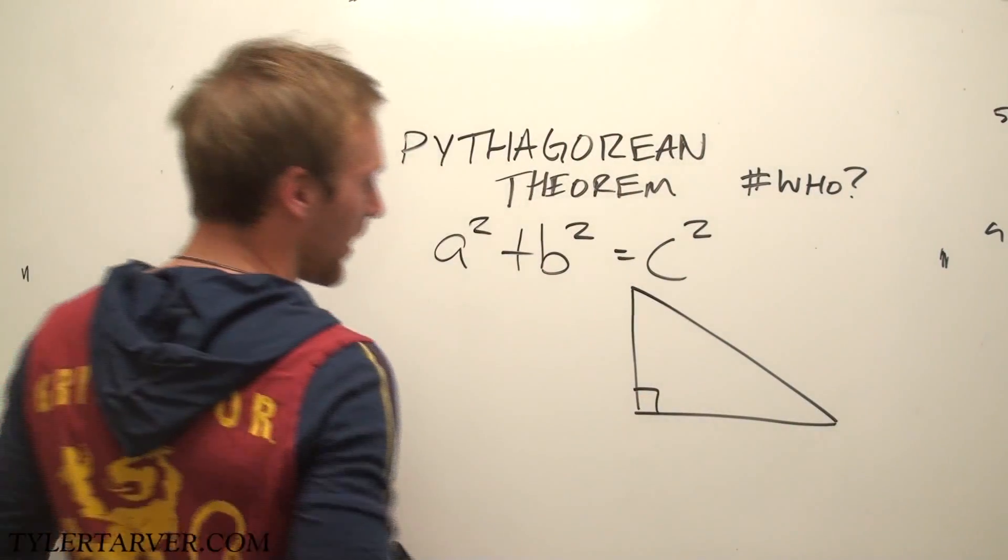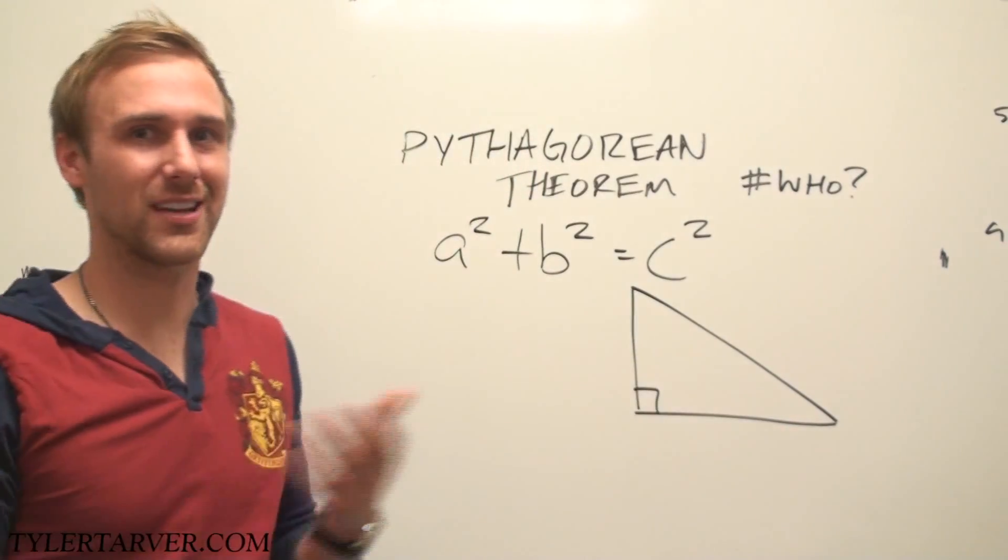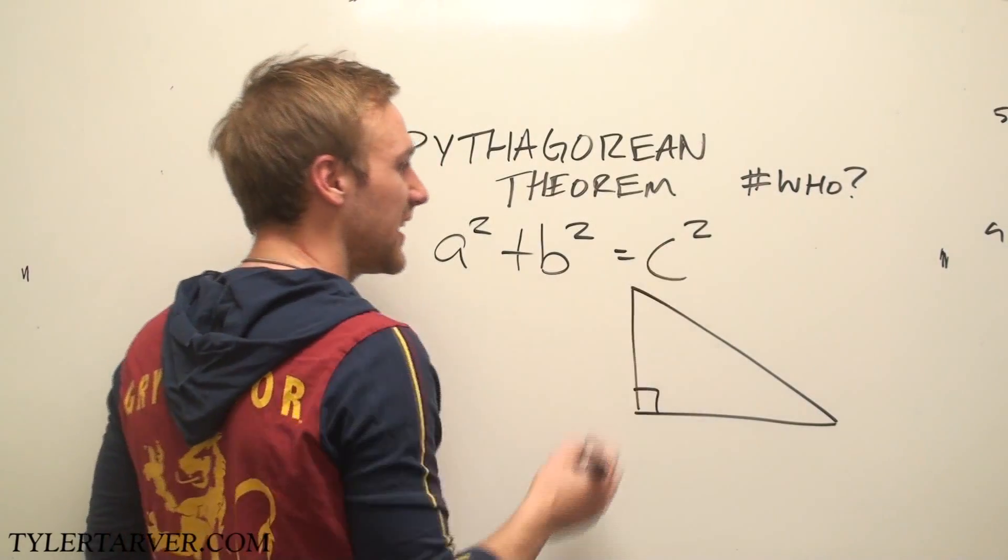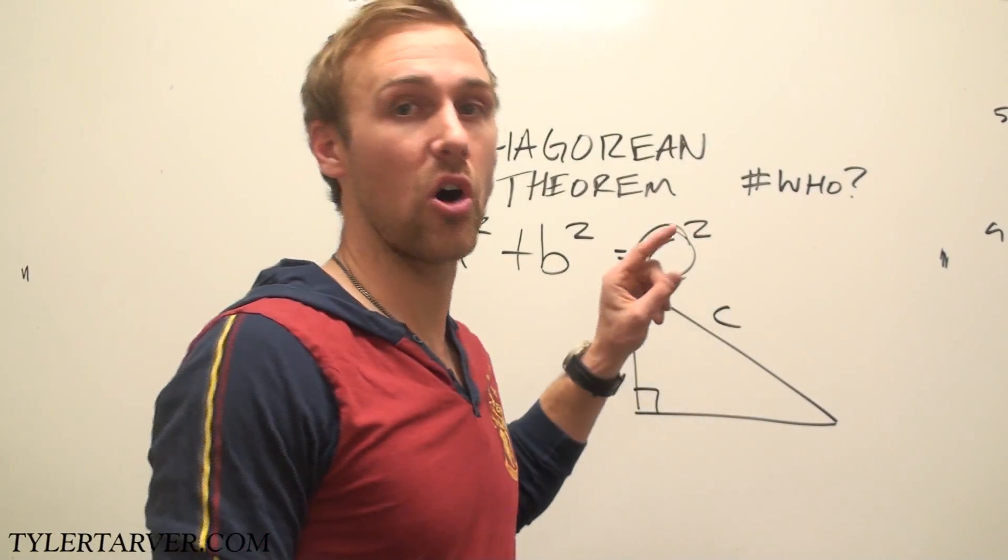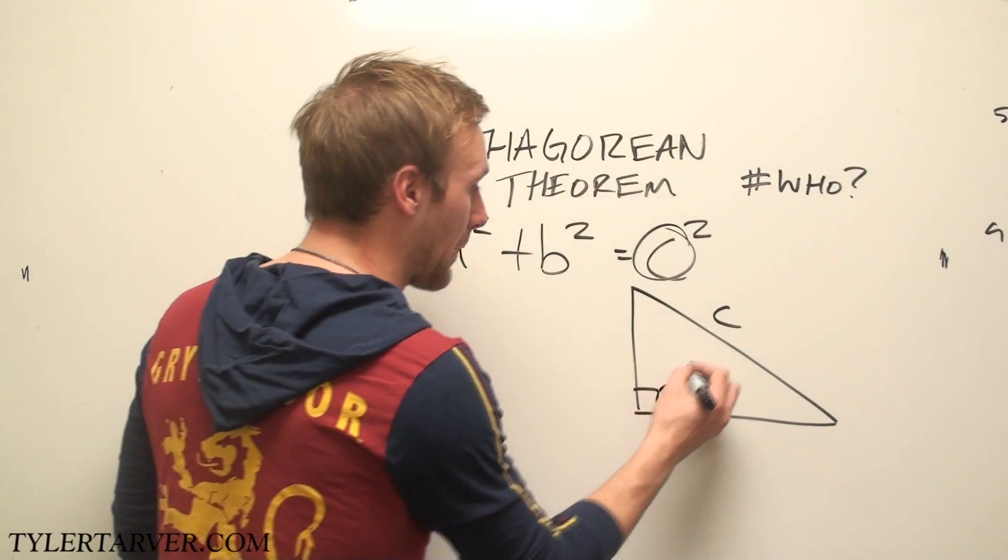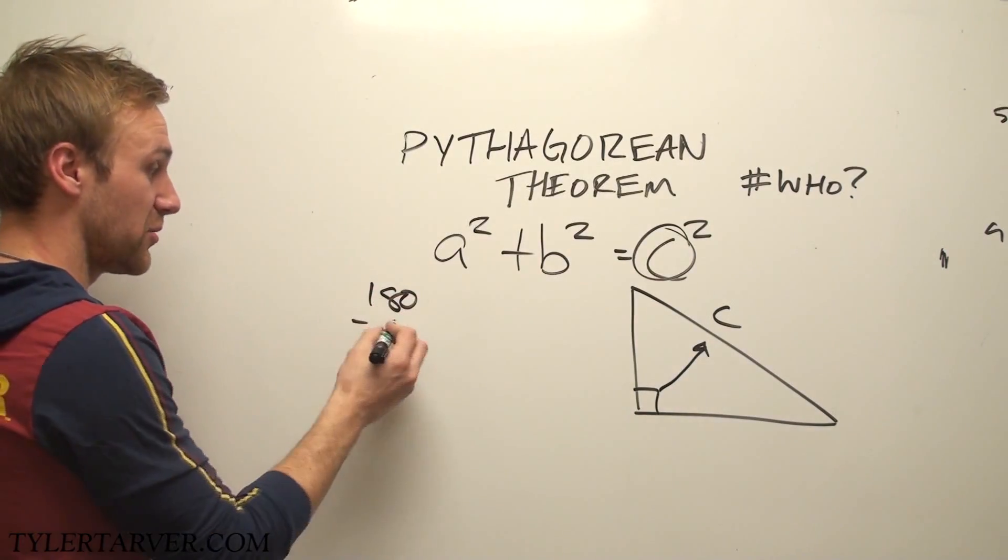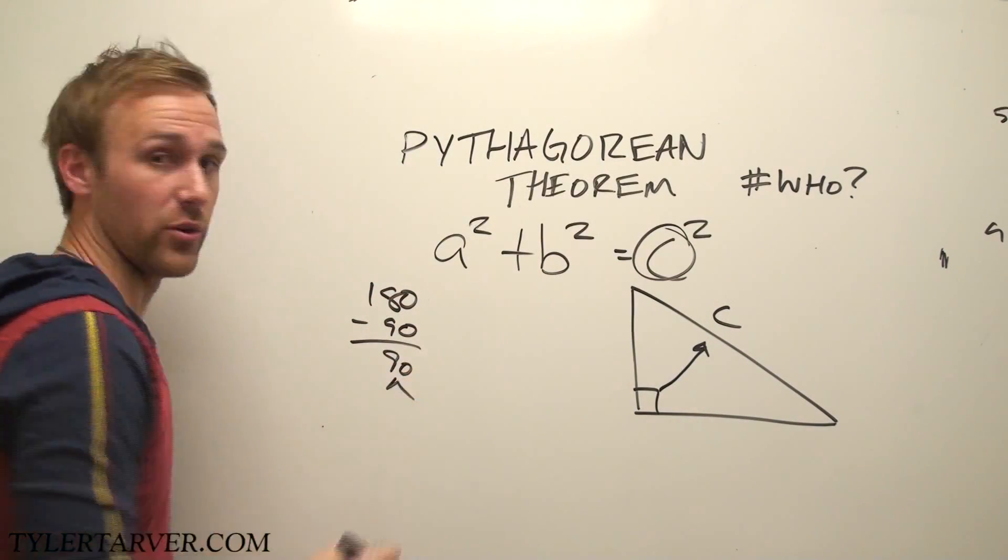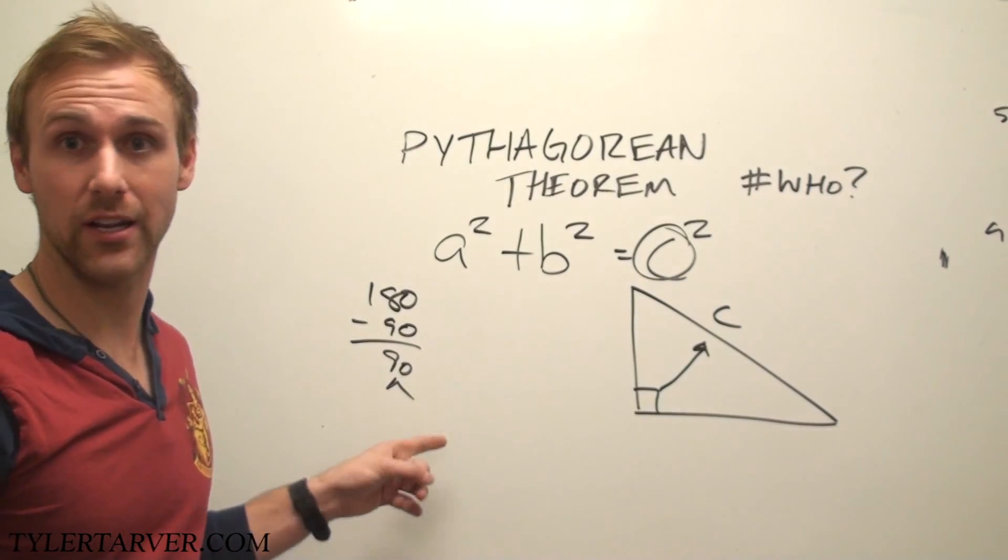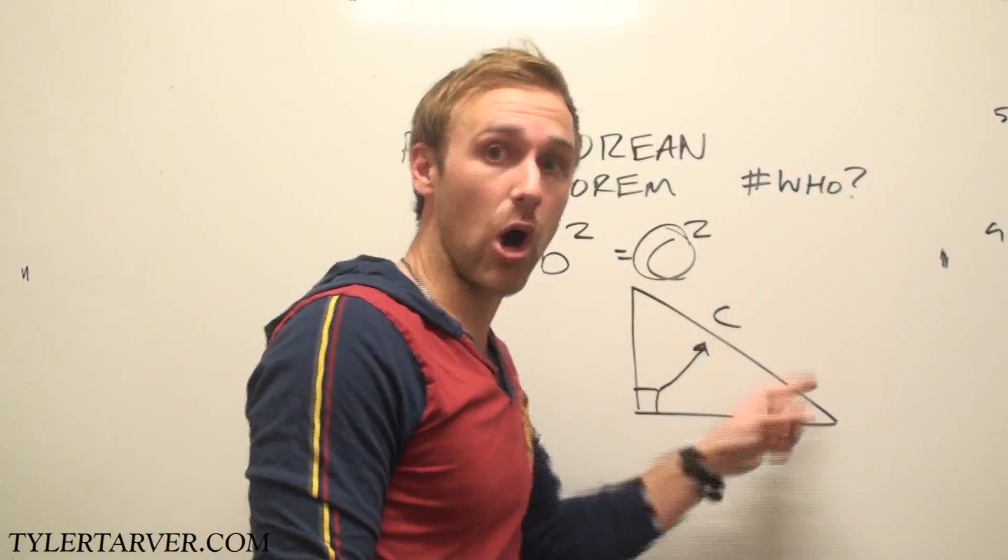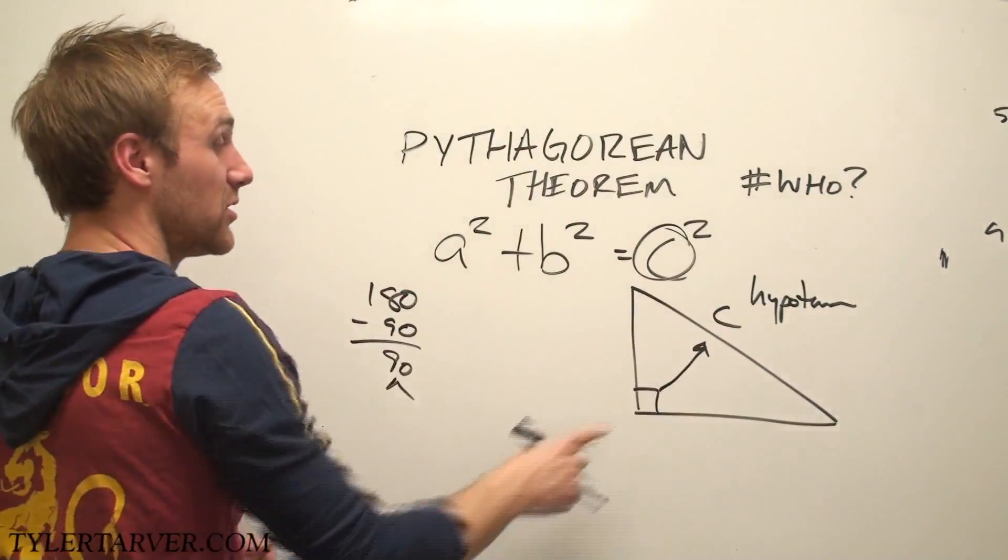So in this right triangle, the A and B, they're not really important. They're like Scottie Pippen and Dennis Rodman. We talk about it sometimes, but really they're always shadowed in comparison to Jordan. C is what's important. C is always, always our hypotenuse. That means it always goes on the largest side, which is always the side that's opposite the right angle.